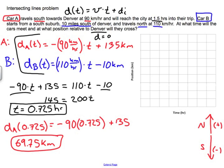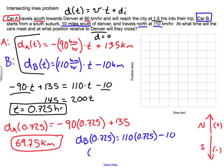To check my work, I'll plug the same time into Car B's equation: D_B(0.725) = 110 × 0.725 − 10. Plugging that into the calculator, I get the same value — 69.75 km. That gives me confidence in my work.